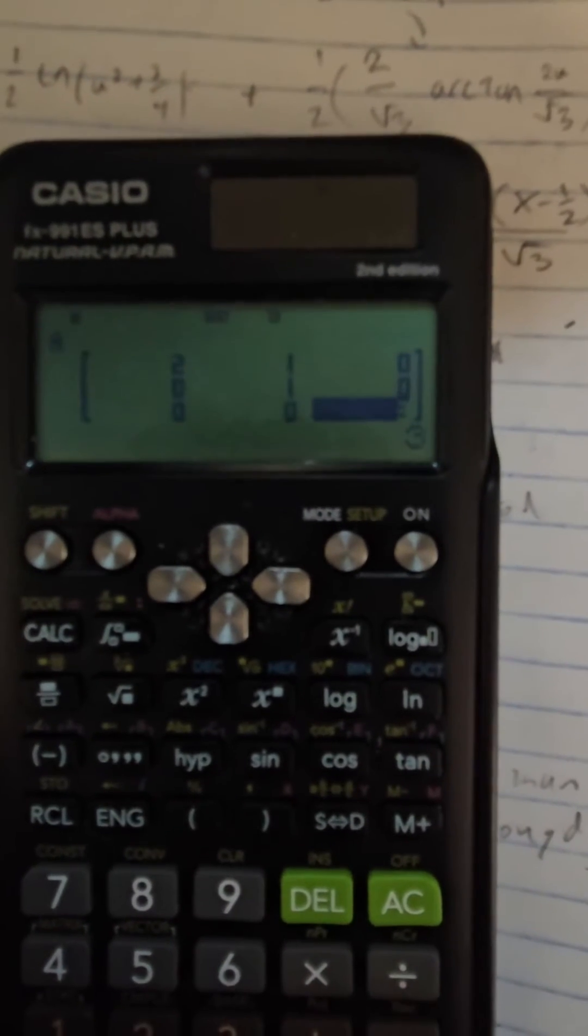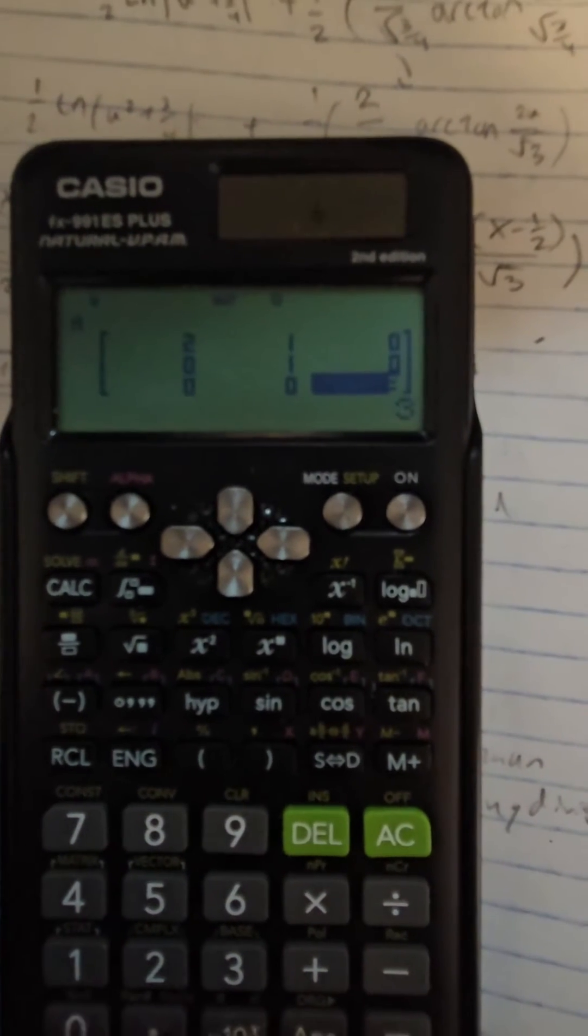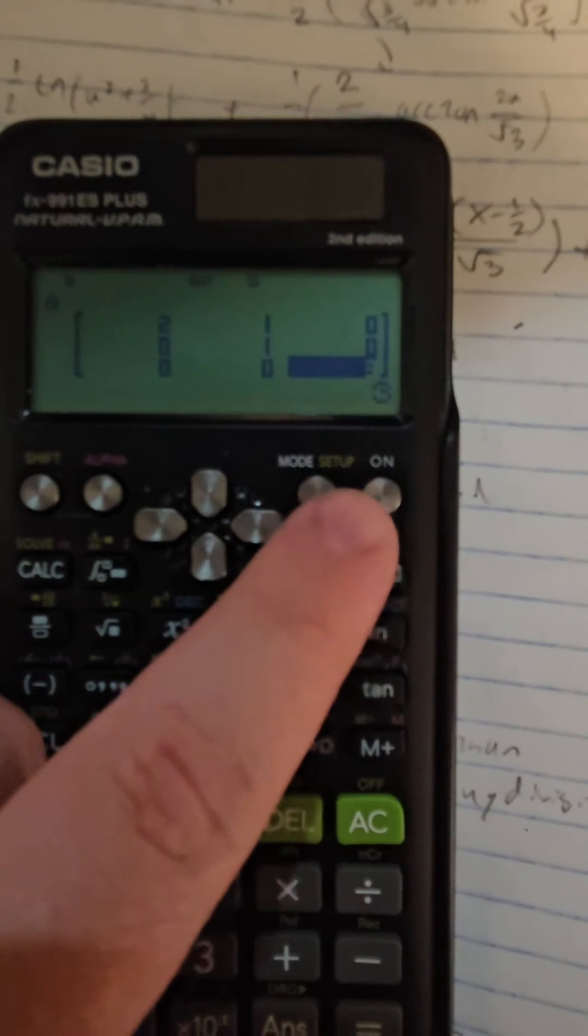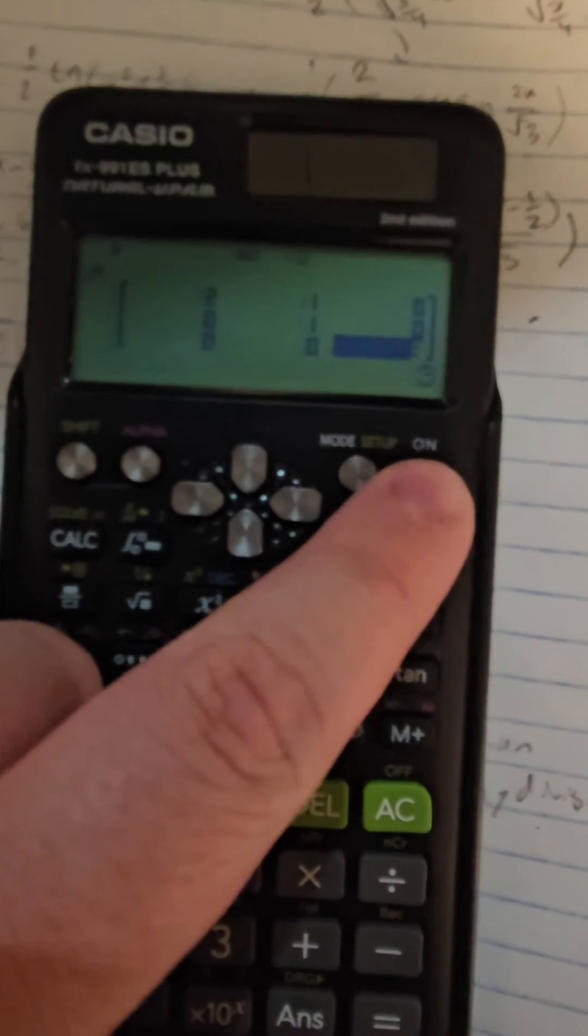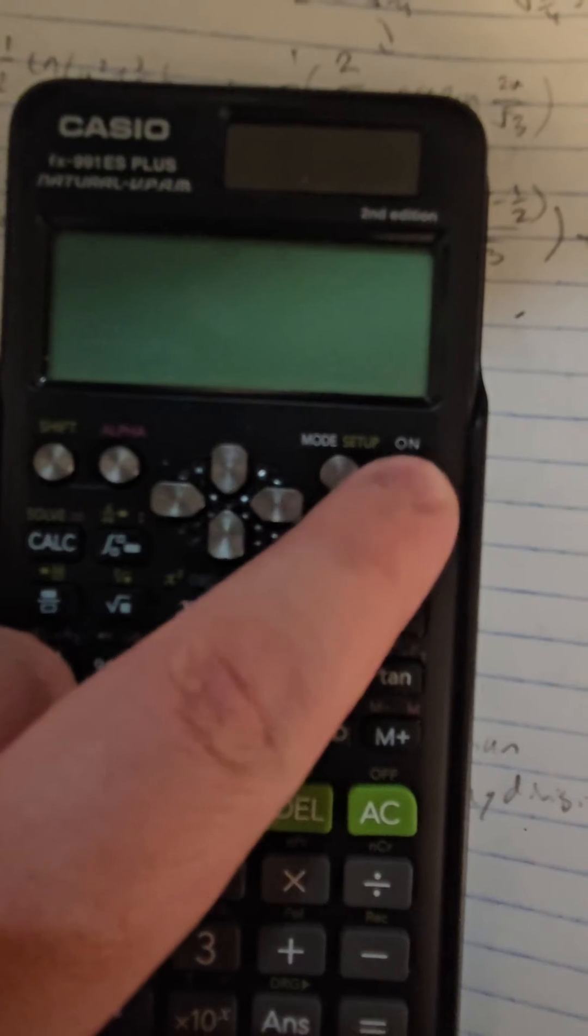The one problem is it doesn't show you the steps. Now you press Enter and it saves it. Now I'm going to press On. It looks like it clears it, but it doesn't actually clear the matrix because it's saved.